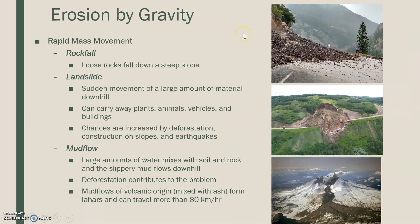Rapid mass movement is just like its name — rapid and quick. The first type is a rockfall: loose rocks fall down a steep slope for any reason. Maybe a bird or squirrel moves one small rock, that rock moves and knocks all the others, and just like dominoes, they all go down.